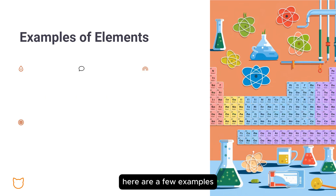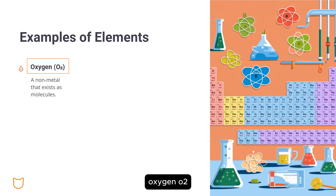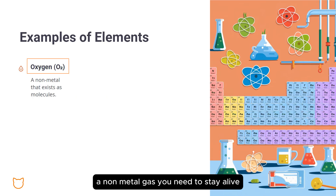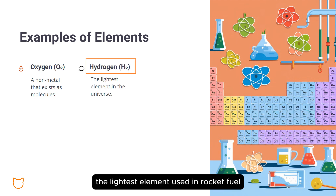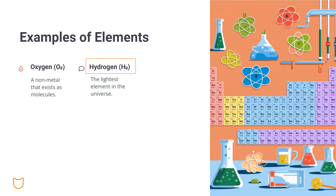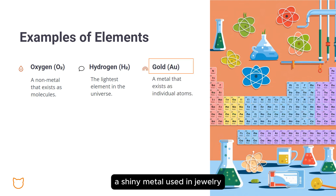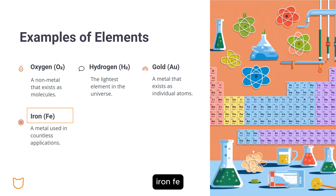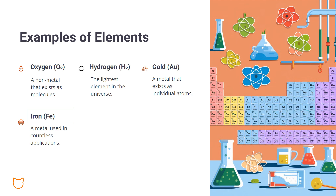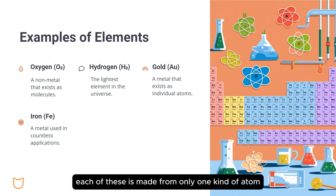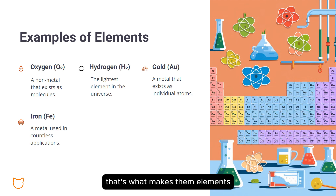Here are a few examples. Oxygen, O2 — a non-metal gas you need to stay alive. Hydrogen, H2 — the lightest element, used in rocket fuel. Gold, Au — a shiny metal used in jewelry. Iron, Fe — a strong metal used in construction and cars. Each of these is made from only one kind of atom — that's what makes them elements.